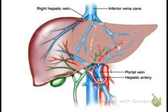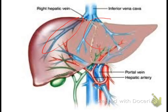It is worth noting that most of the right hepatic vein lies outside of the liver, whereas the middle and left hepatic veins are mostly located inside the liver. Together, these three major veins and the inferior hepatic veins drain the liver into the inferior vena cava.